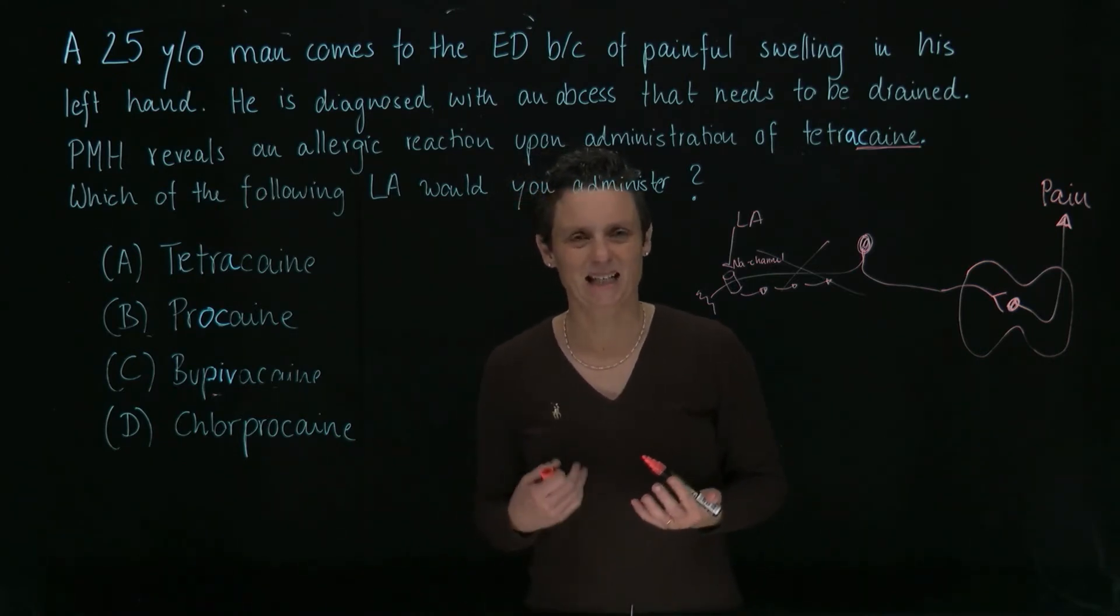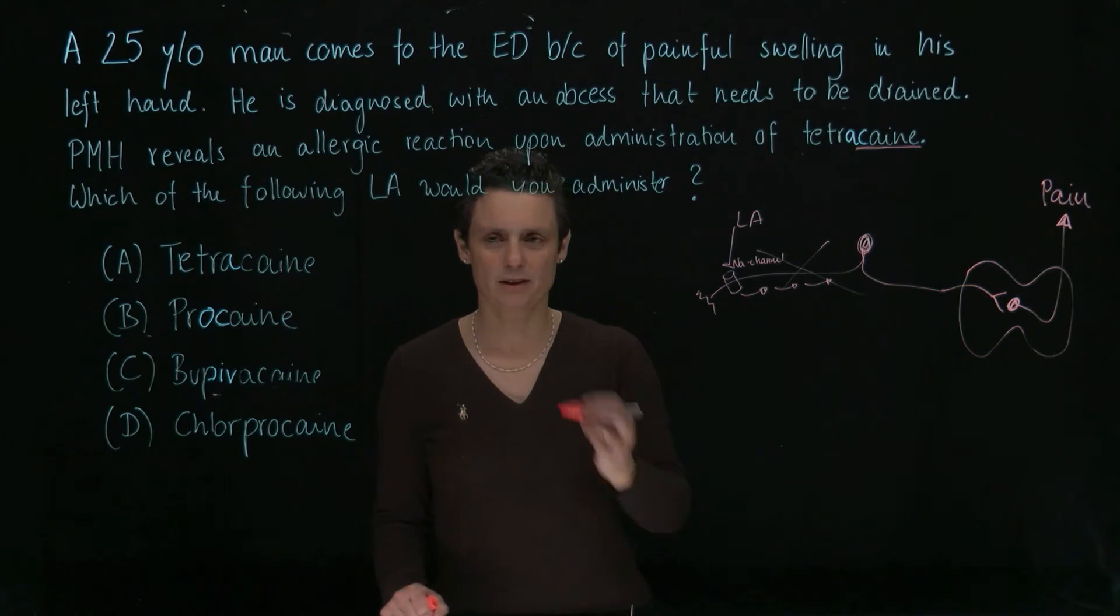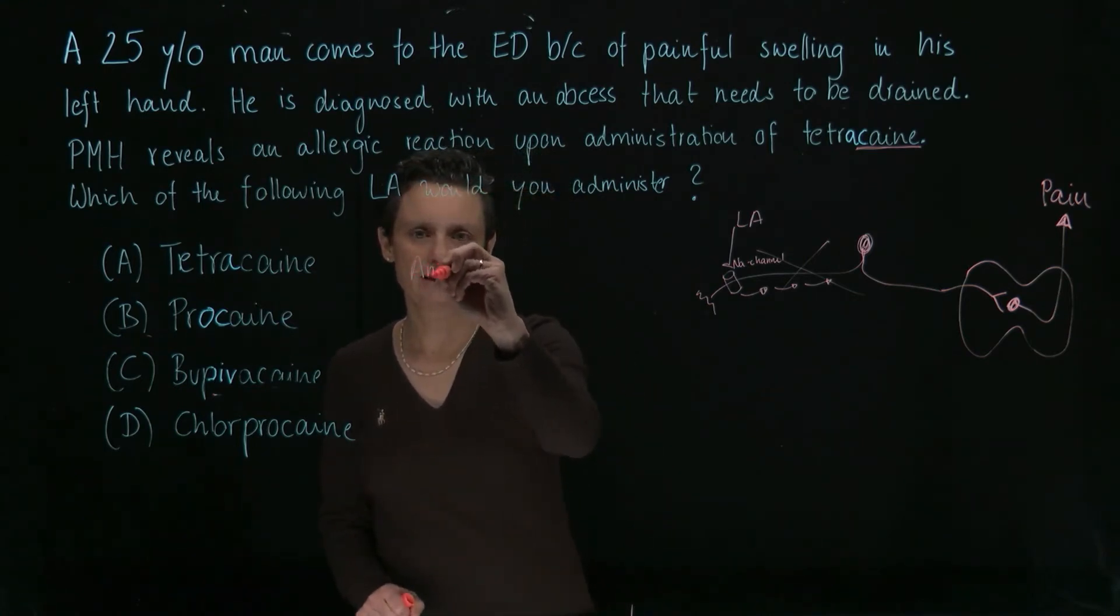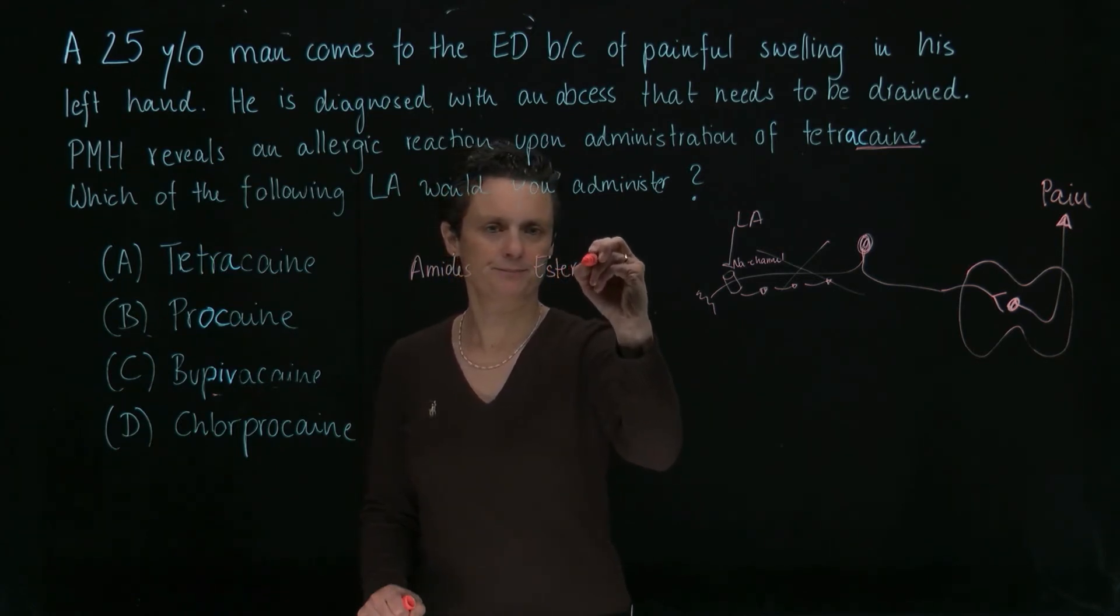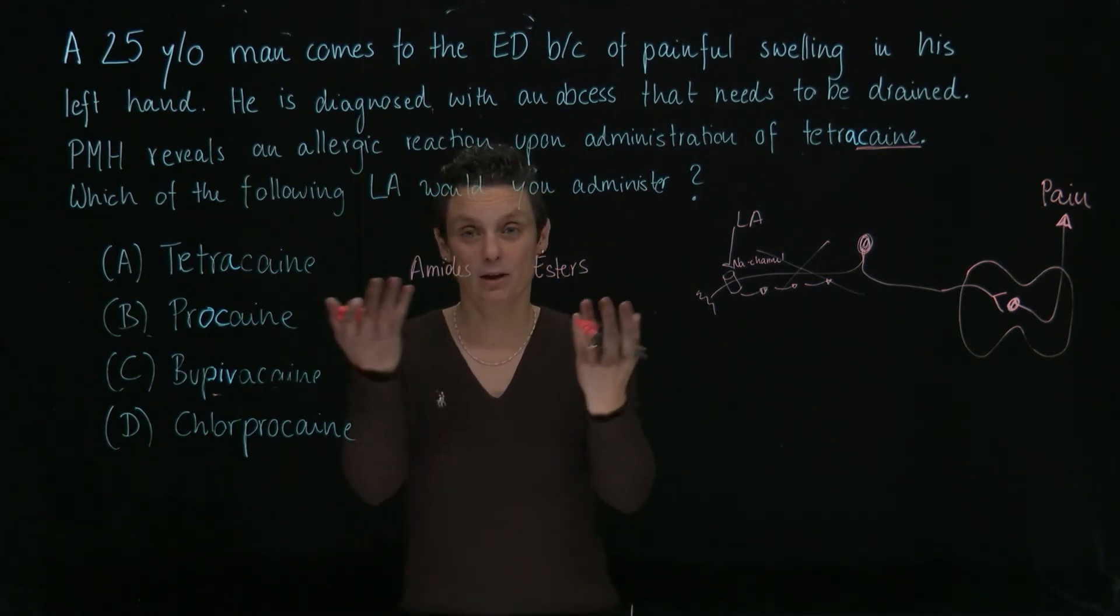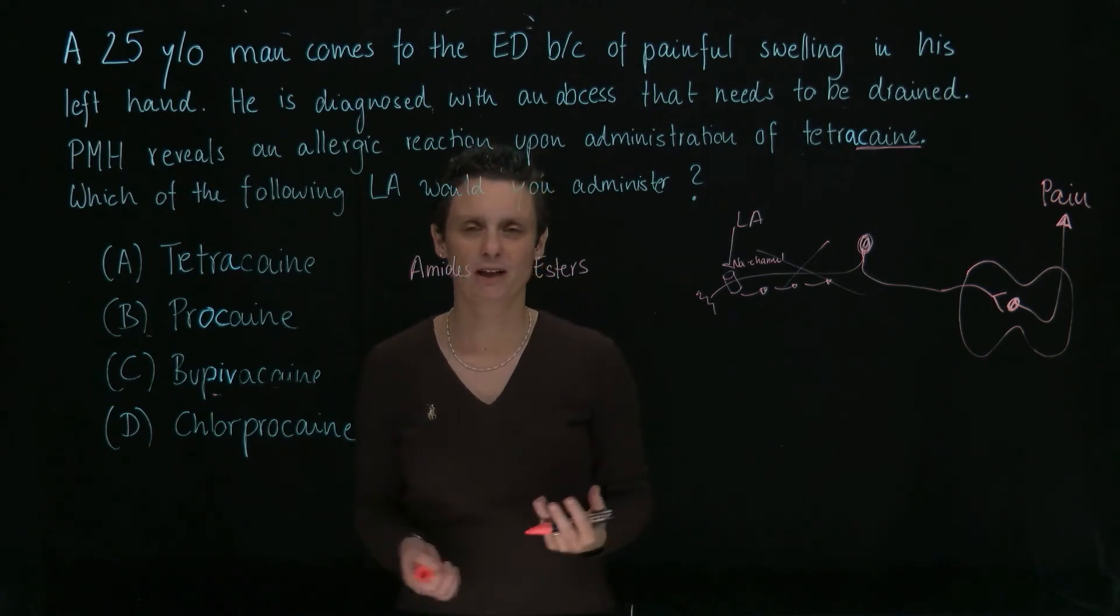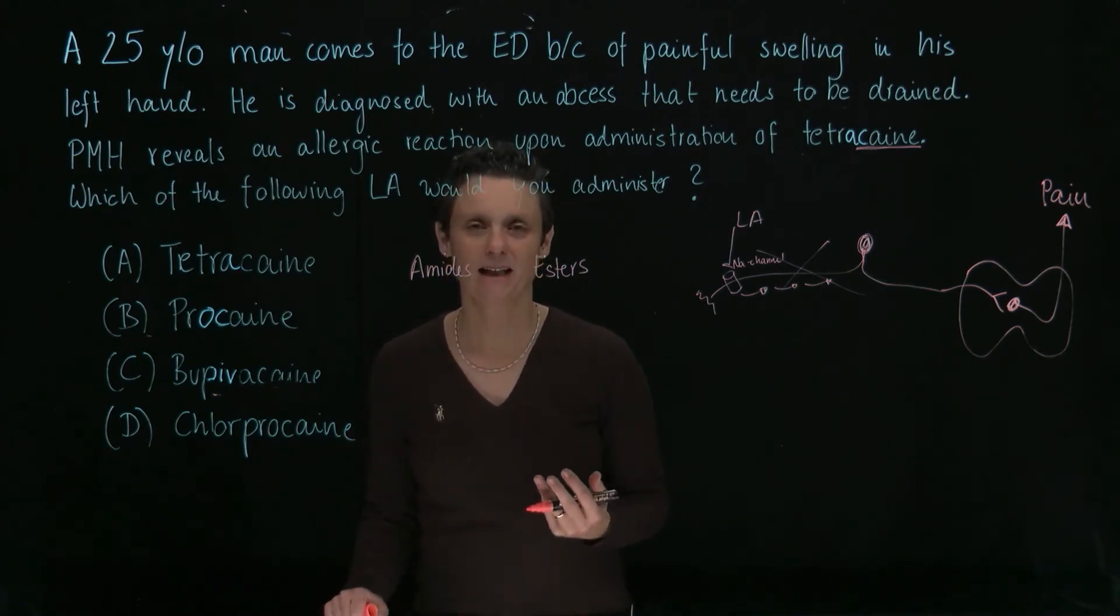So local anesthetics come generally in two flavors. We have amides and ester local anesthetics. Amides and esters, they obviously are different by their chemistry. But what does it help us clinically?